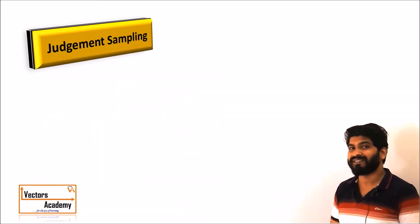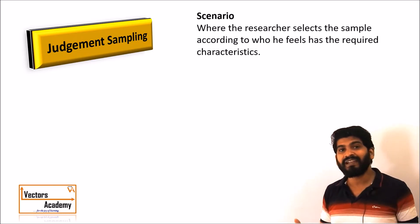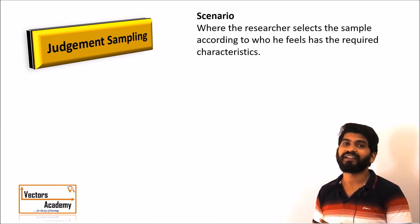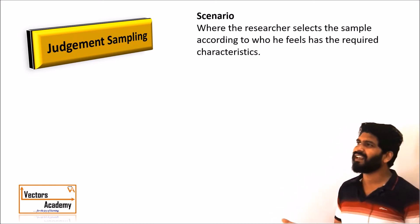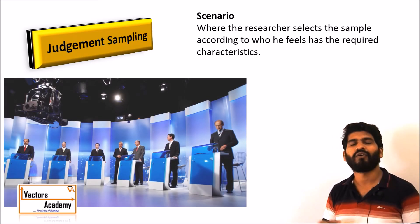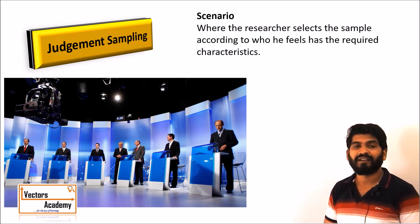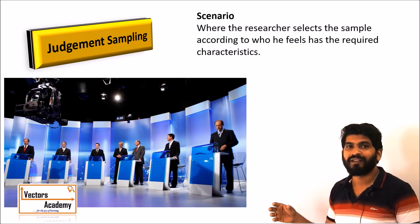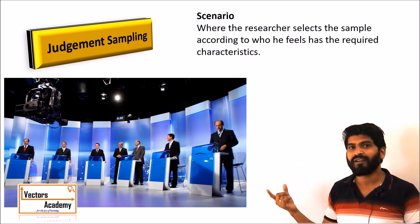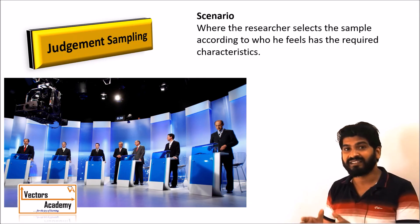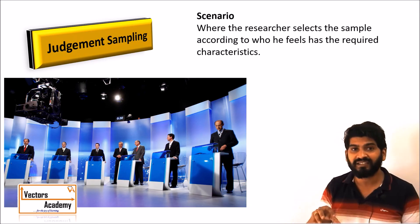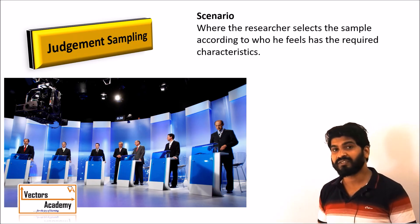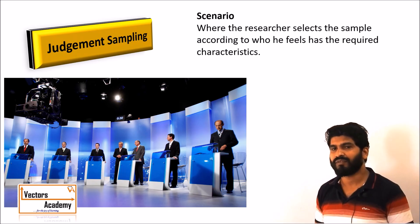The next type is judgment sampling, which is completely based on what the researcher thinks is fit for conducting a research. For example, in opinion debates on news channels, guests are invited for debates on certain topics. Those people are selected by the channel itself — whoever the researcher feels is fit for conducting the debate is chosen as the sample.